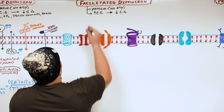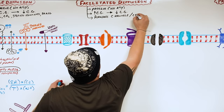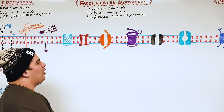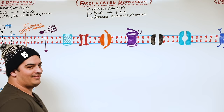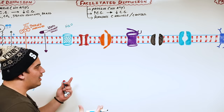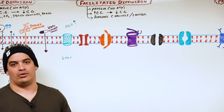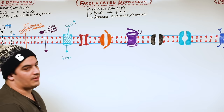Facilitated diffusion requires either a channel or a carrier to mediate the diffusion process. One major type is osmosis — the movement of water from areas of high concentration to areas of low concentration. For example, if there's more water outside the cell, water moves from outside to inside the cell.